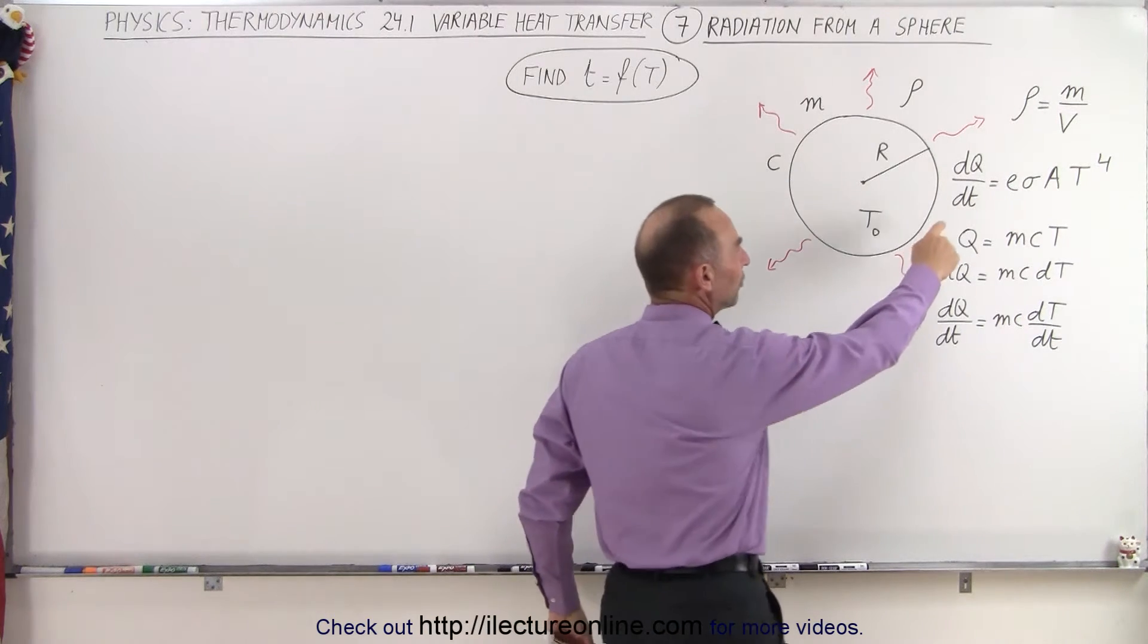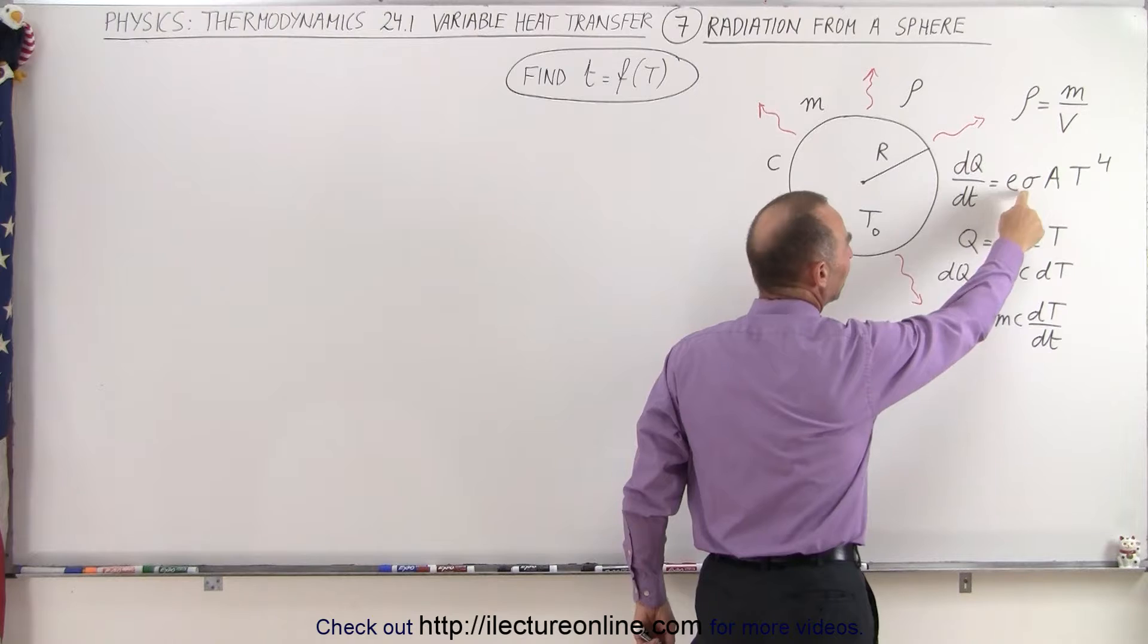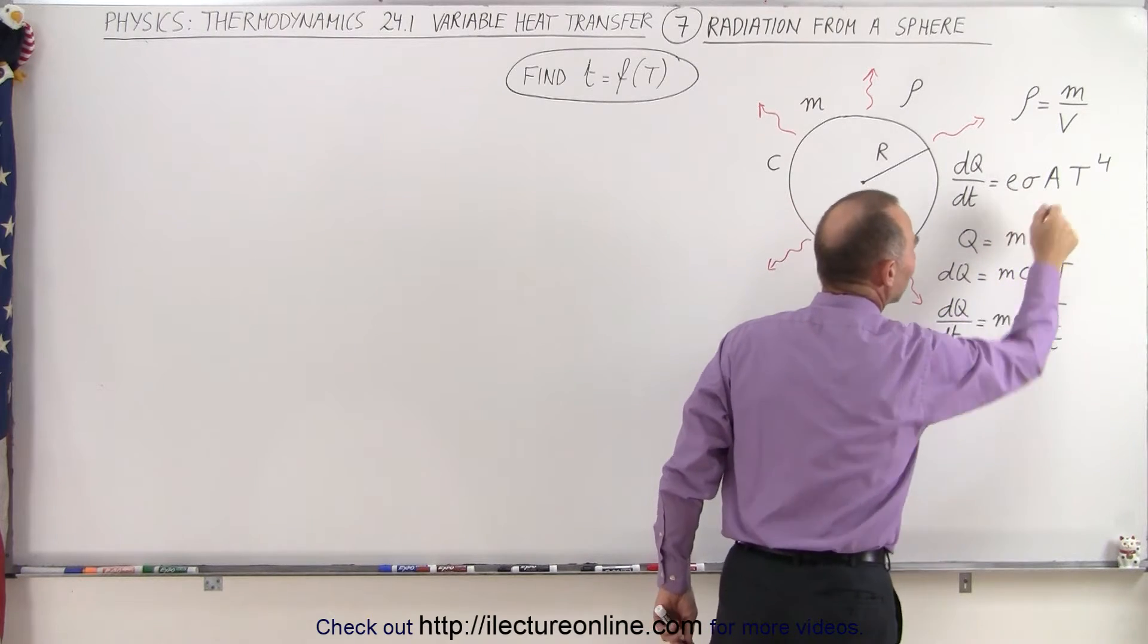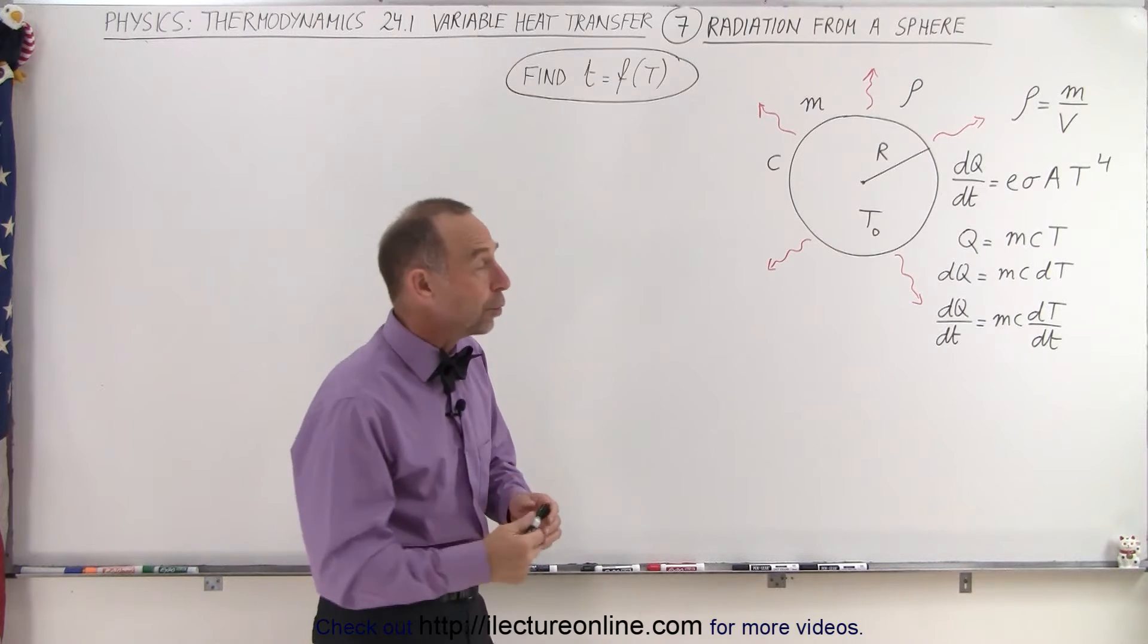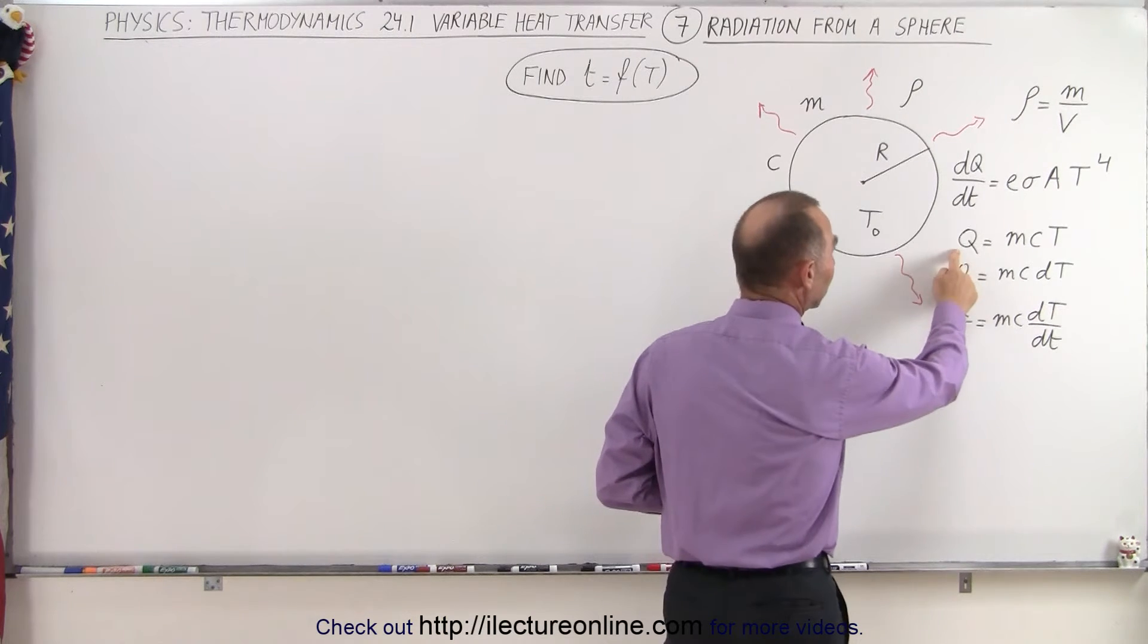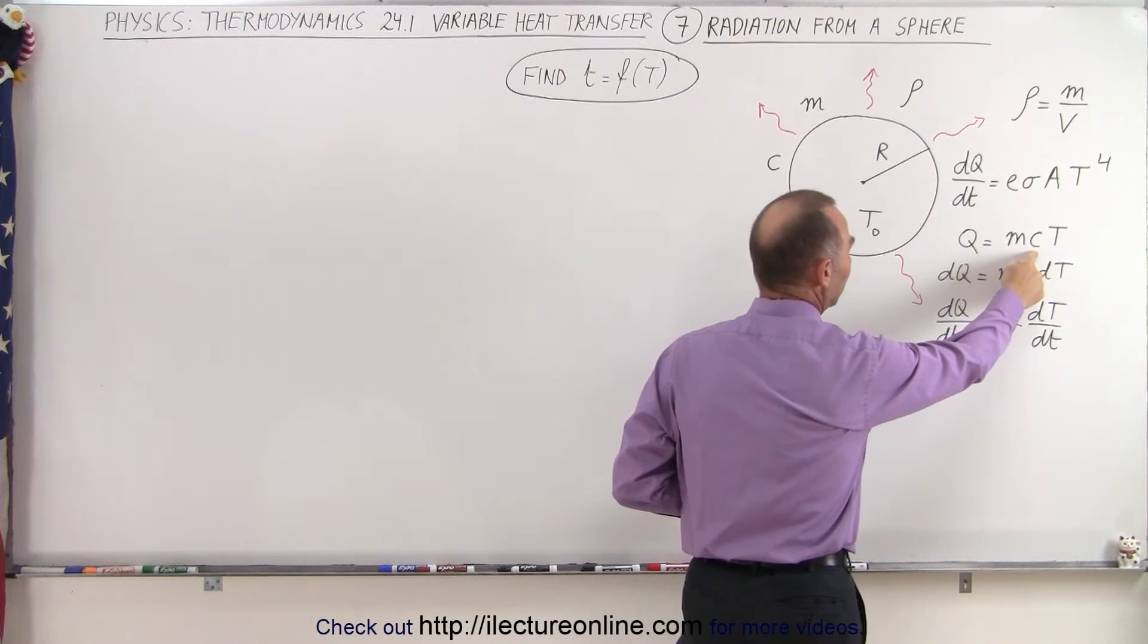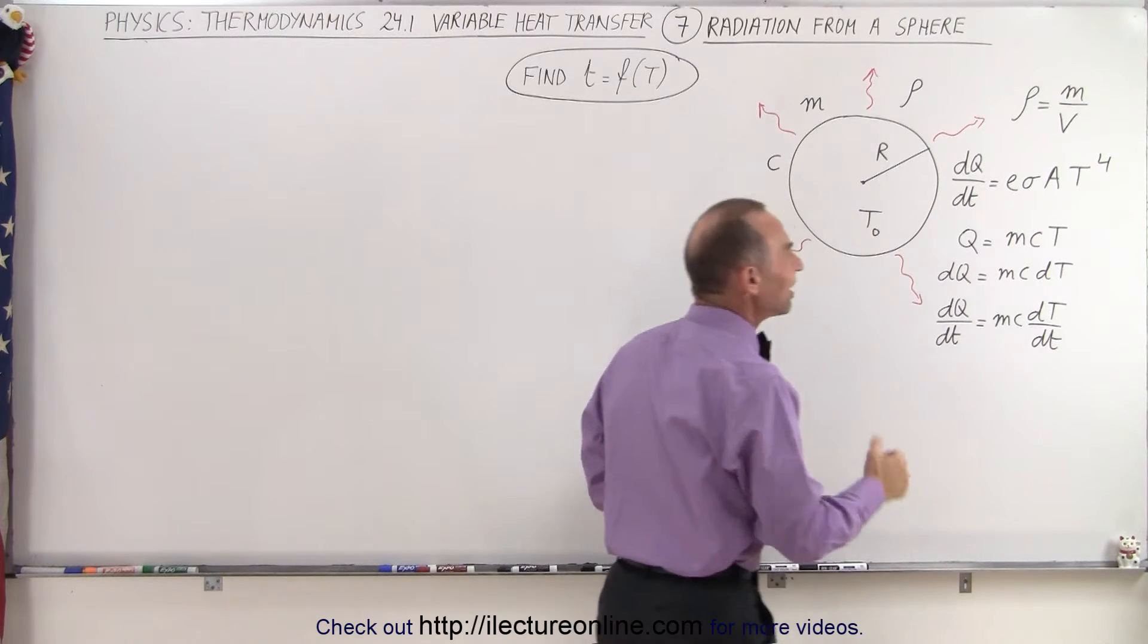So we can say that the radiation dQ/dt is equal to E sigma A times T to the fourth power. And of course that's the Stefan-Boltzmann equation. We also know that the heat contained within an object is equal to the mass times a specific heat constant times T, the temperature.